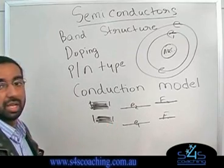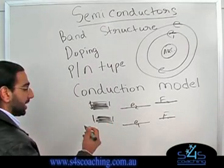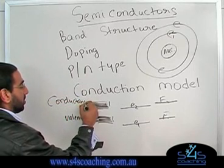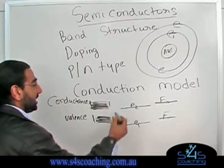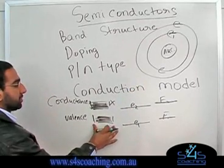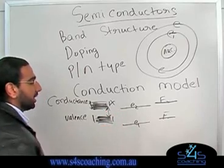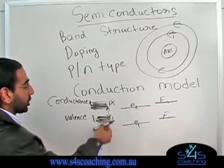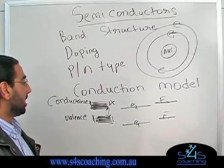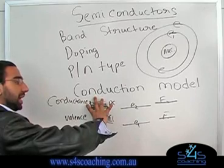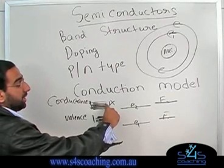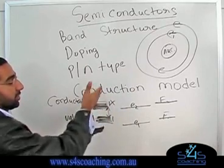The lowest band in an insulator or a semiconductor is called the valence band, and this is called the conductance band. For an electron to conduct, it needs to be in the conductance band — then the electron is free to move and can conduct. Between the valence band and the conductance band, there is a gap called the forbidden gap. The electron cannot be in the forbidden gap; it can either be in the valence band, in which case it will not conduct, or in the conductance band, in which case it will conduct. In a conductor, these two bands overlap, so there's no forbidden gap. In a semiconductor, there's a decent-sized gap, and in an insulator this gap is pretty big, making it harder for electrons to conduct.